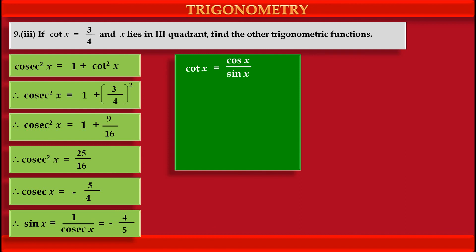Now, we know that cot x = cos x / sin x. By rearranging, cos x = cot x × sin x. Substituting the values, cos x = (3/4) × (−4/5).